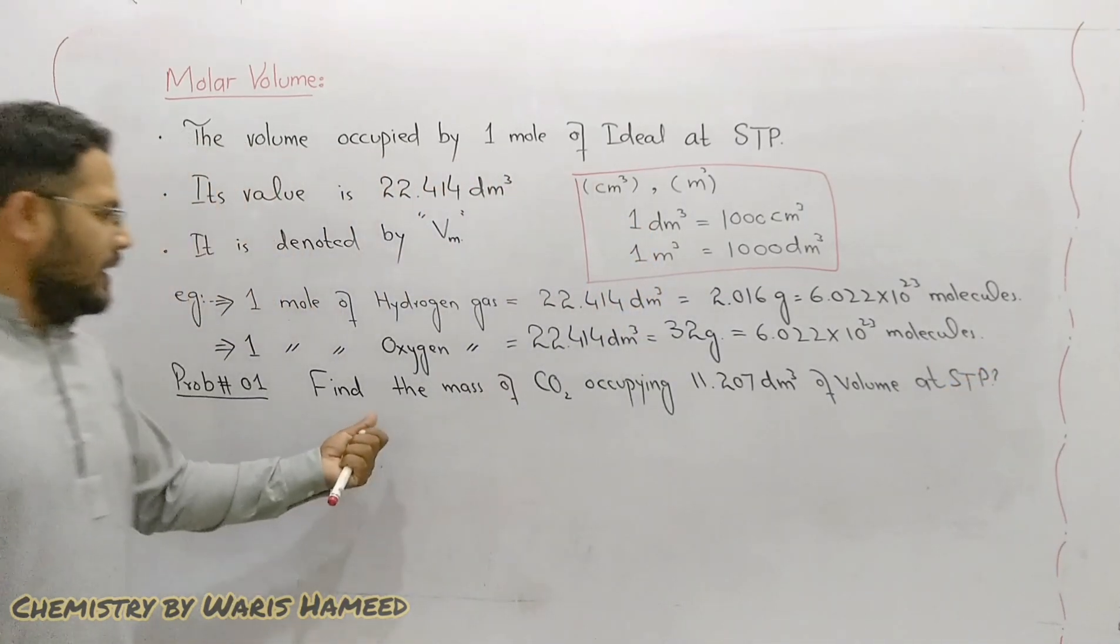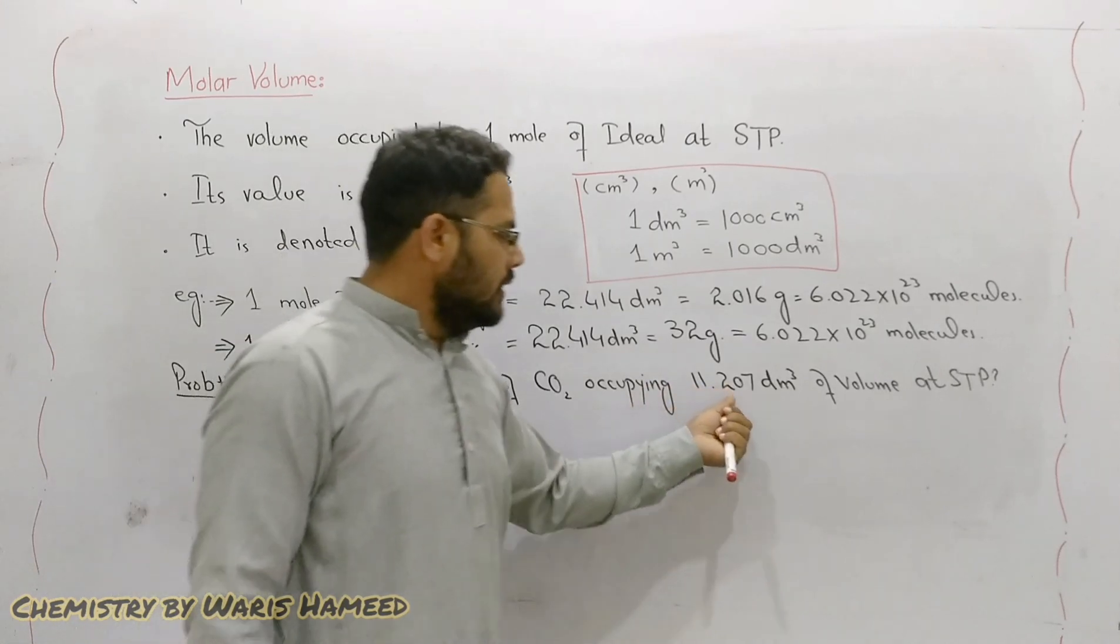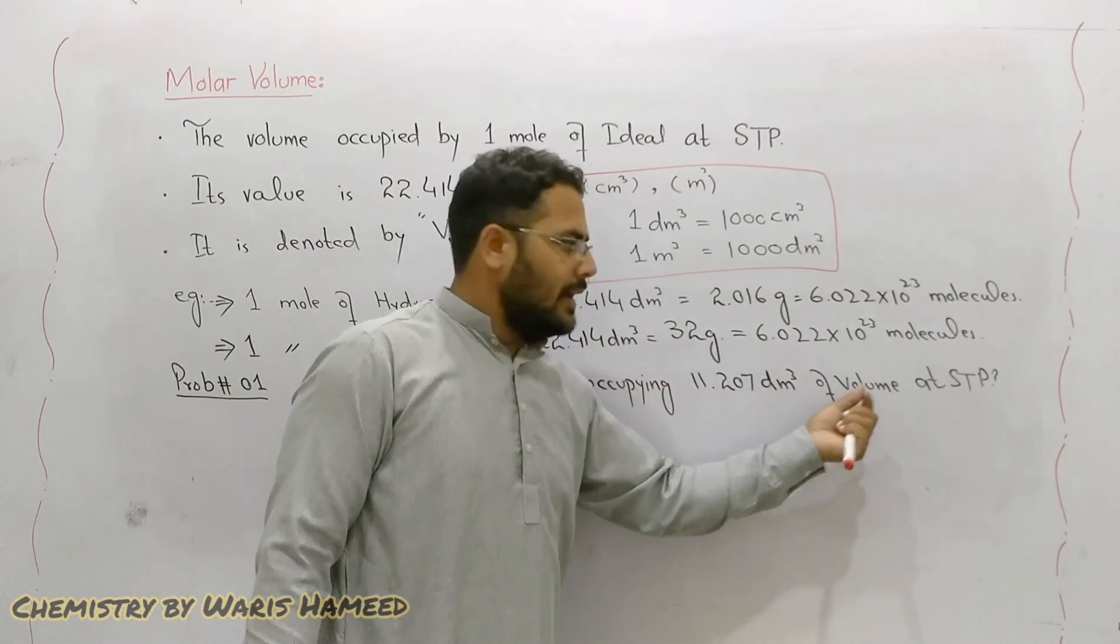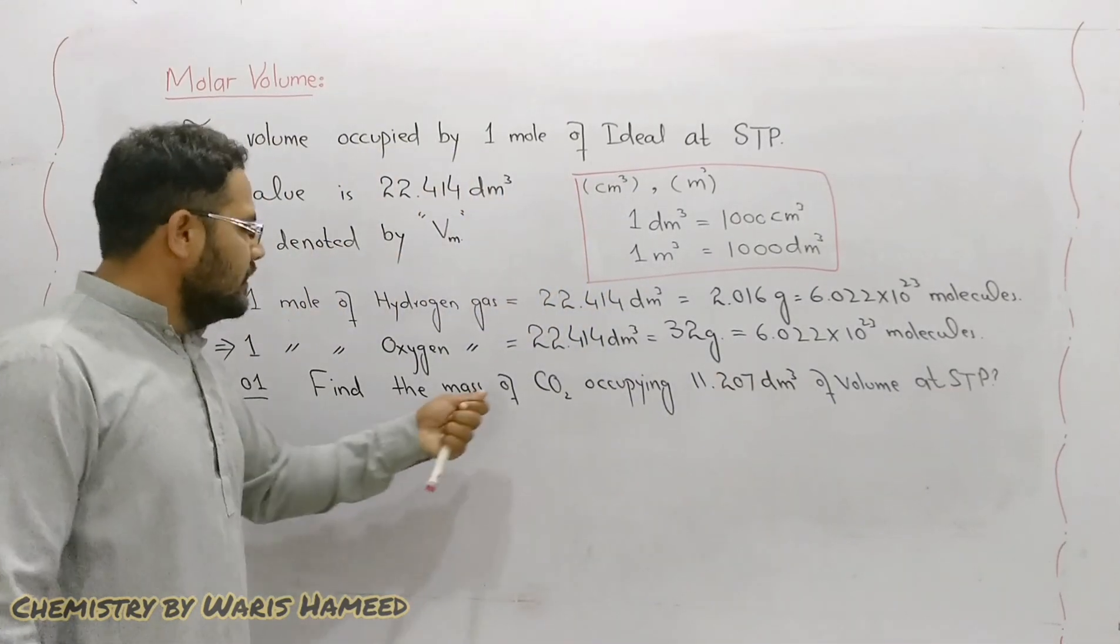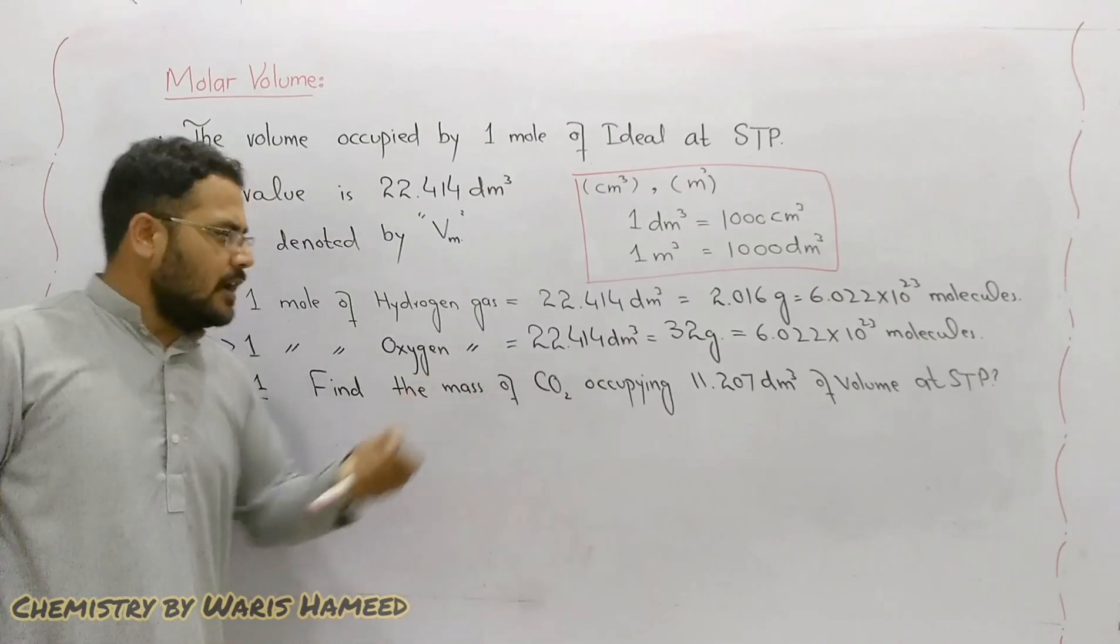We have carbon dioxide and it is occupying 11.207 dm³ of volume and the conditions are standard temperature and pressure. Then how much mass is there of carbon dioxide?